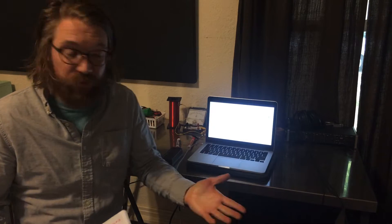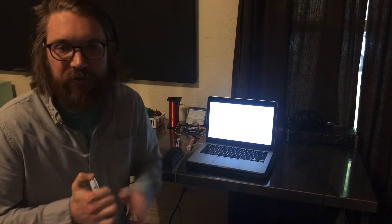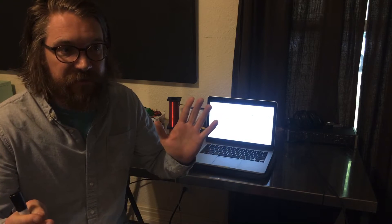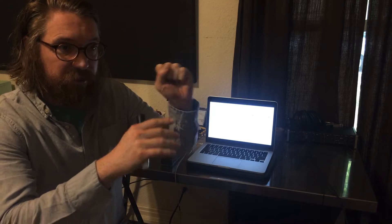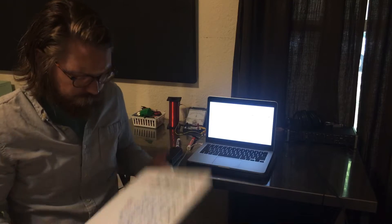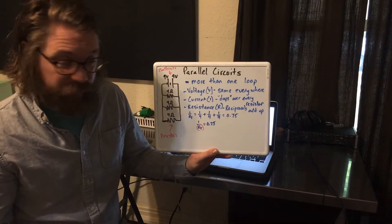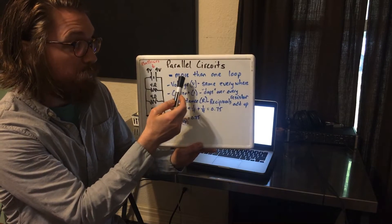Alright, hello everybody, happy Friday! Today's lecture is on parallel circuits. Last class we looked at series circuits — a series circuit is one big loop. Your battery has wire coming out of it, and that wire goes through every single resistor or light bulb before it makes its way back to the battery: one big loop. Today we're looking at parallel circuits, which have more than one loop.